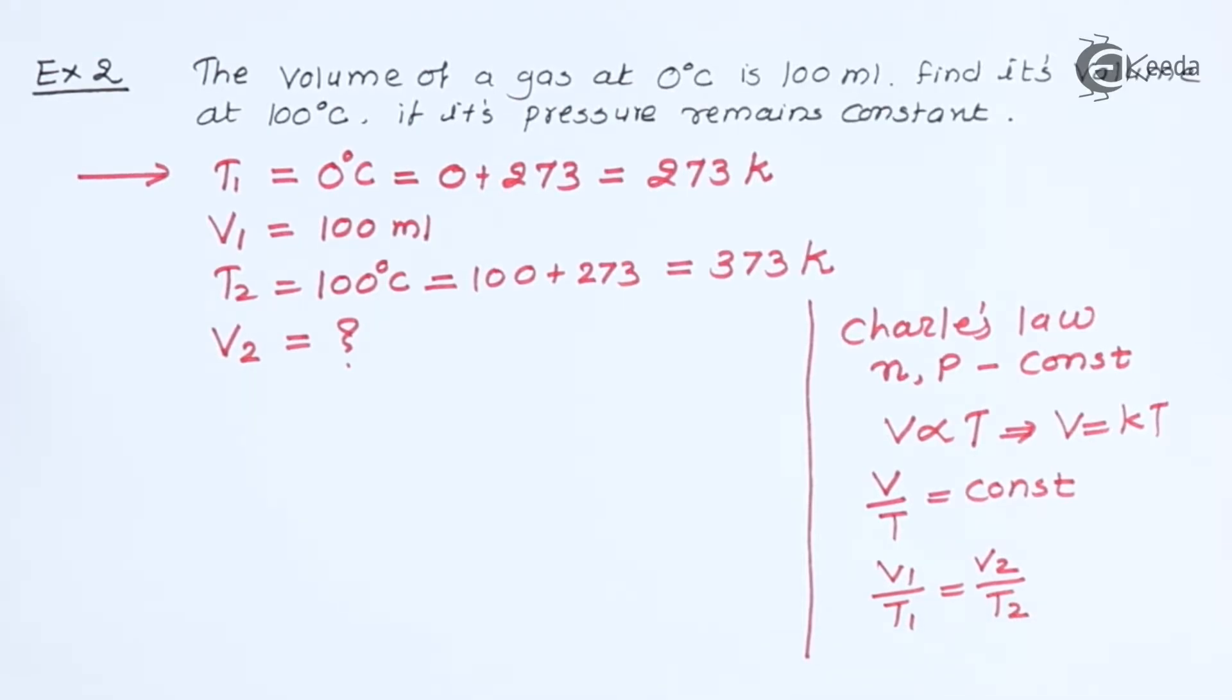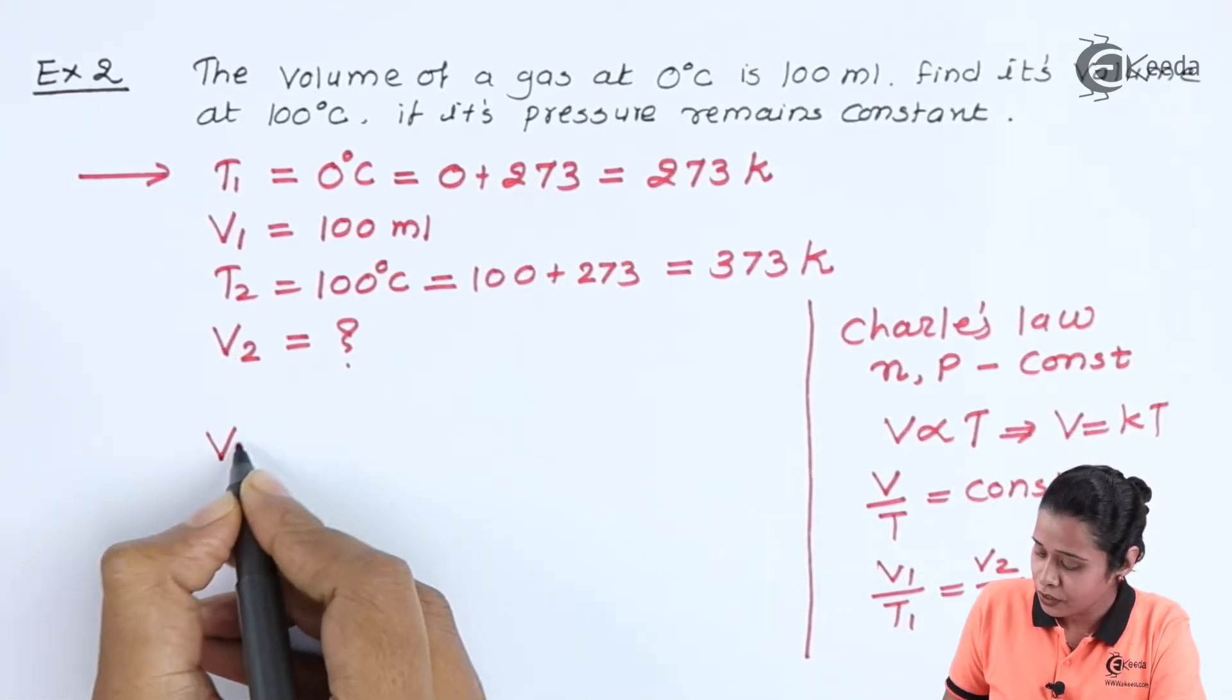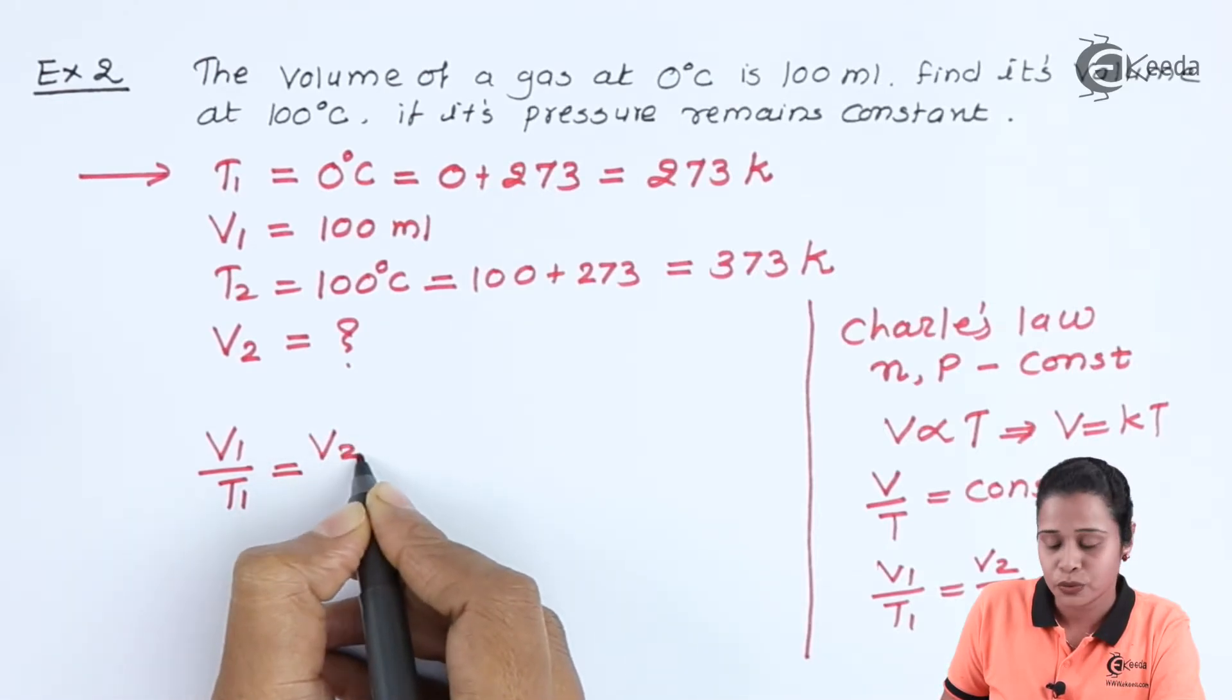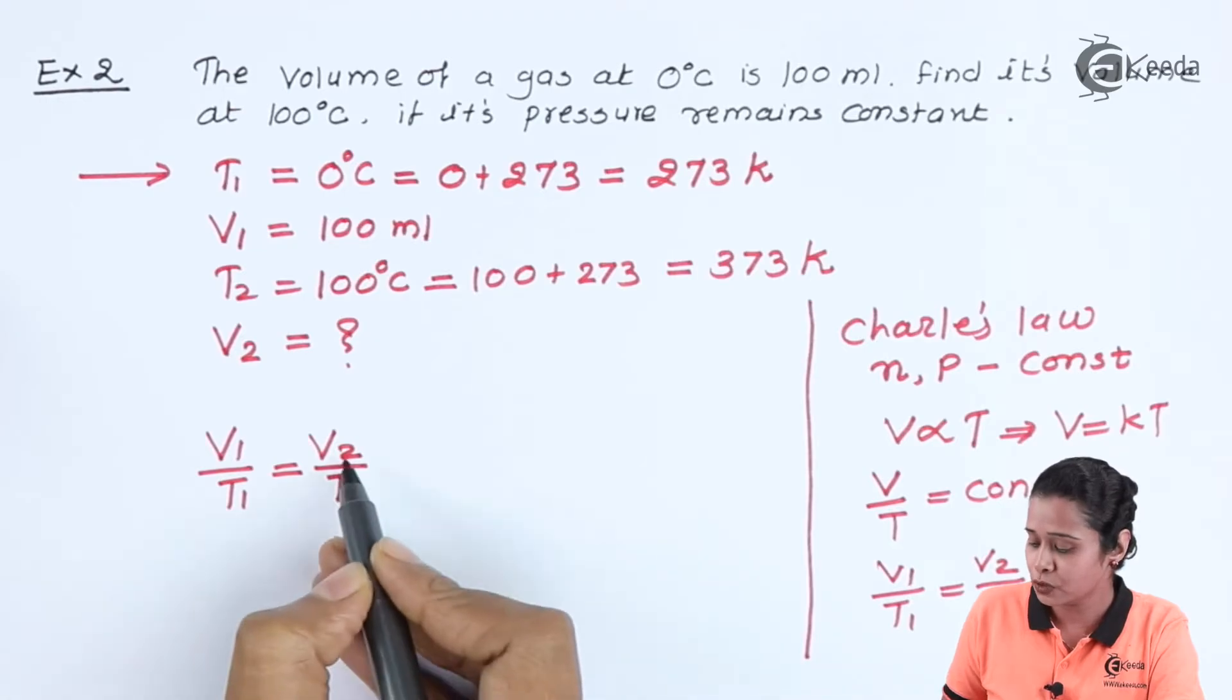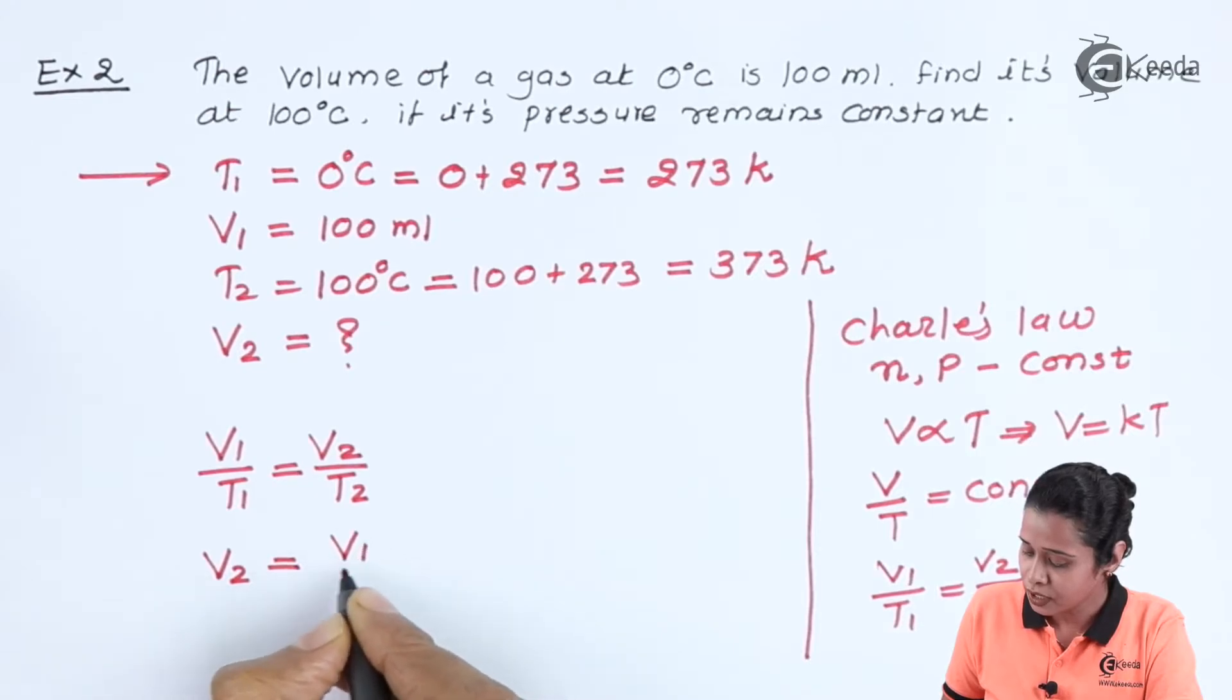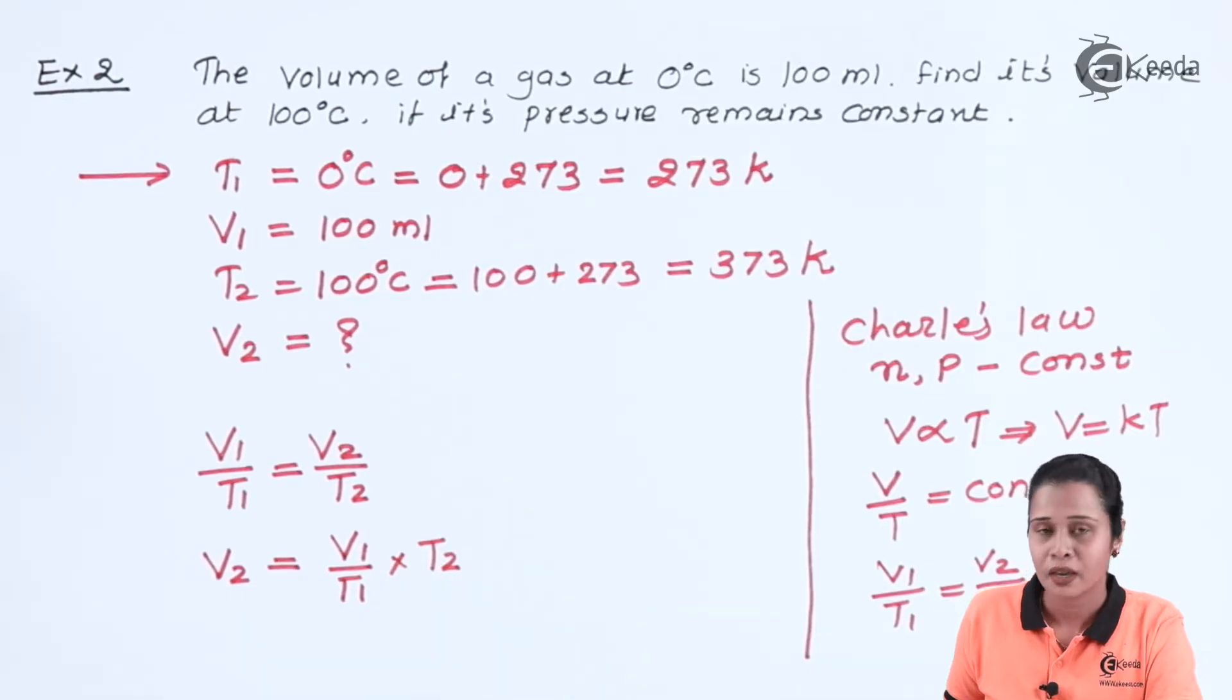This is the formula that we are going to use in this equation. Let us start with V1 by T1 is equal to V2 by T2. Our aim to find V2 value. We will write V2 is equal to V1 by T1 into T2. Let us substitute the values.